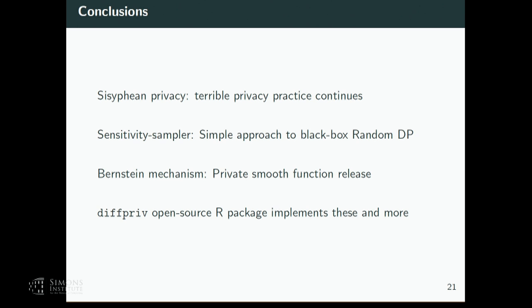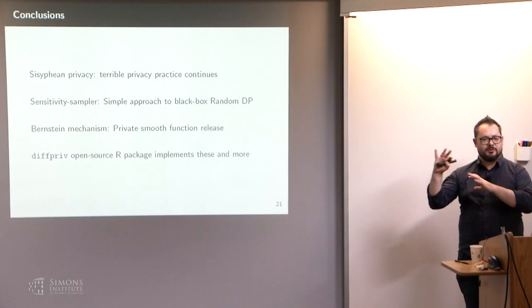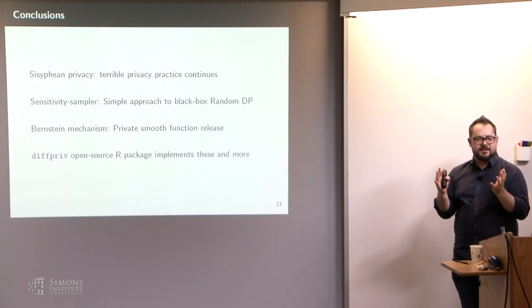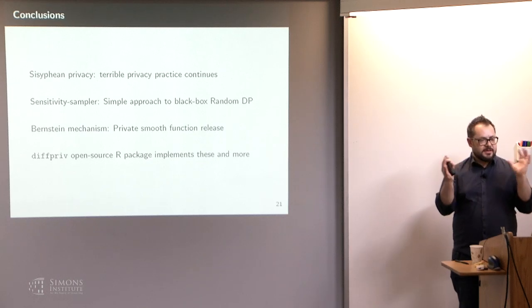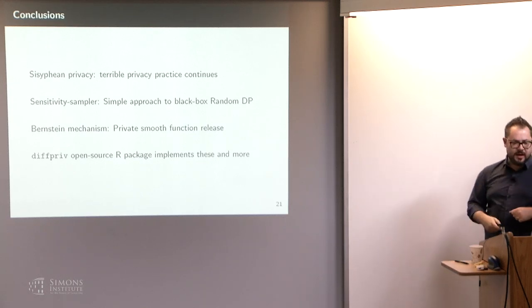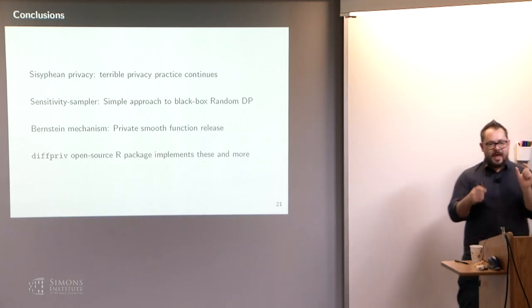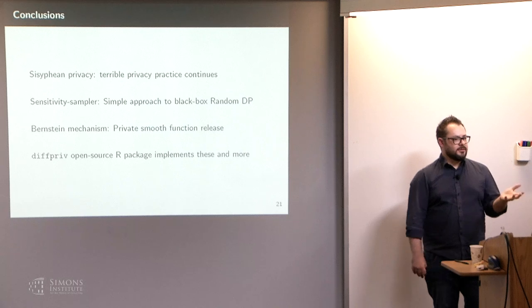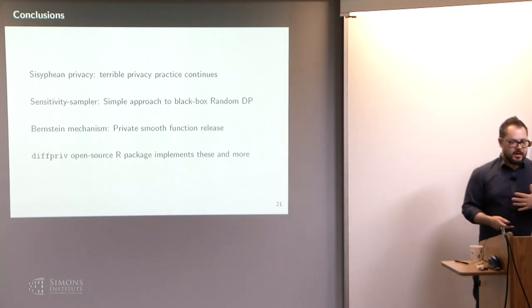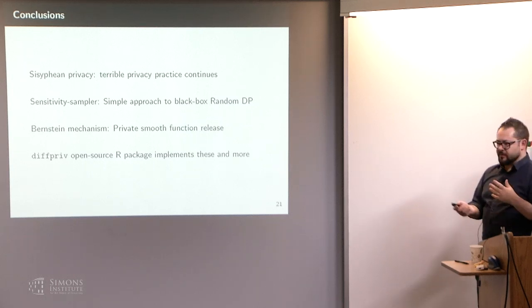To summarize: while differential privacy is fantastic and has had incredible successes, we're still seeing crazy things happen in privacy — not just breaches, but also crazy solutions. People still don't know differential privacy — it's just crazy. The sensitivity sampler has some use cases and lets you avoid bounding global sensitivity when it's hard to do, or where you don't trust your implementation. I also talked quickly about the Bernstein mechanism for private function release. Thanks.